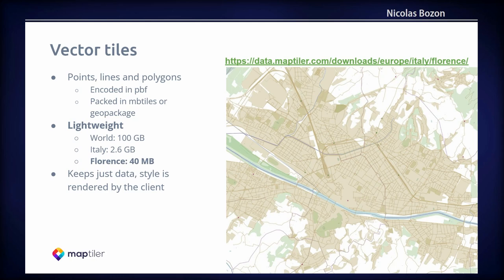Vector tiles use less bandwidth and allow for faster performance. To give you a few figures from our MapTiler Data website: the full world OpenStreetMap vector tiles are just 100GB. The extract for Italy is 2.6GB, whereas the Florence metropolitan area is only 40MB — much more lightweight compared to raster tiles.